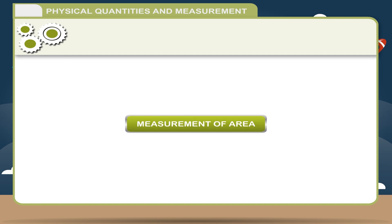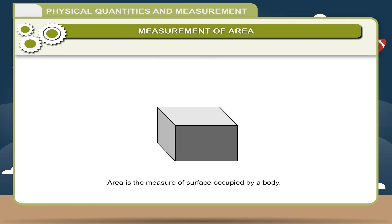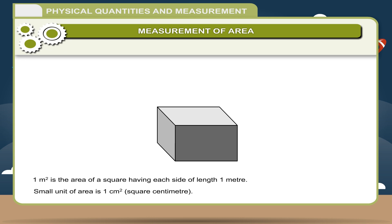Measurement of area. Area is the measure of surface occupied by a body. The SI unit of area is square meter. 1 square meter is the area of a square having each side of length 1 meter. Small unit of area is 1 square centimeter.